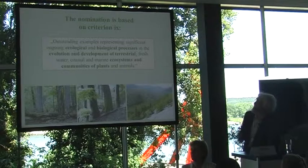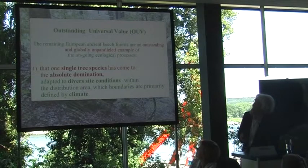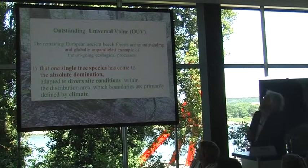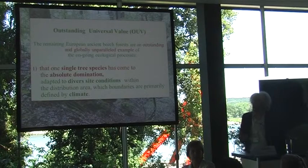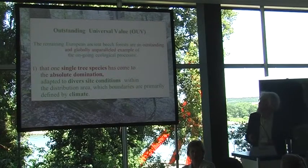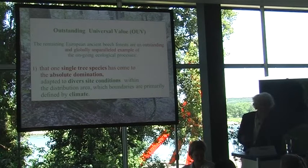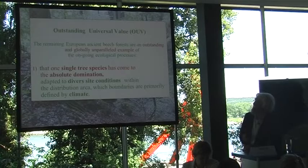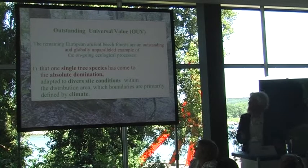The inscription was on the basis of criteria nine — outstanding examples representing significant ongoing ecological and biological processes. The remaining European ancient beech forests are, and that's accepted, an outstanding and globally unparalleled example of ongoing ecological processes. The first is that one single tree species has come to absolute domination in natural vegetation in large parts of a continent.